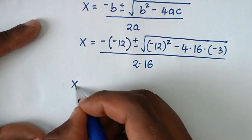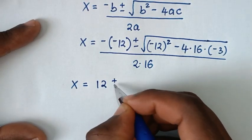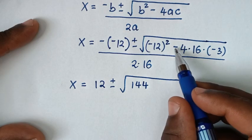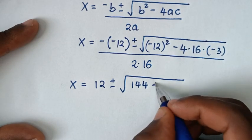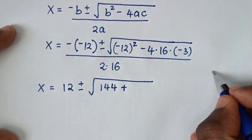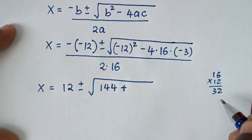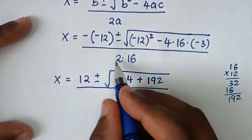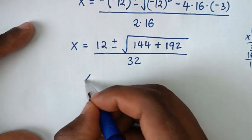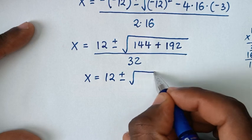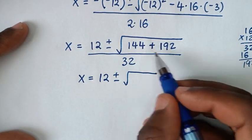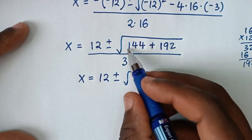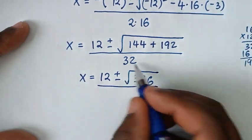Then in the next step, negative of negative 12 gives positive 12, plus or minus square root of: negative 12 squared is 144, and negative 4 times negative 3 gives positive 12, so 12 times 16 is 192. So 144 plus 192 gives 336, over 2 times 16 which is 32.